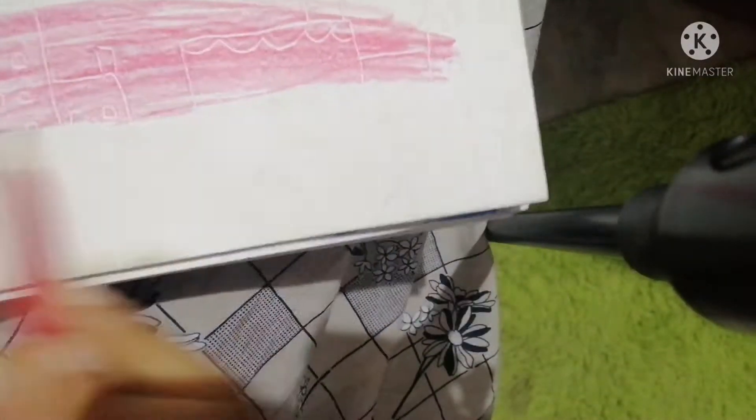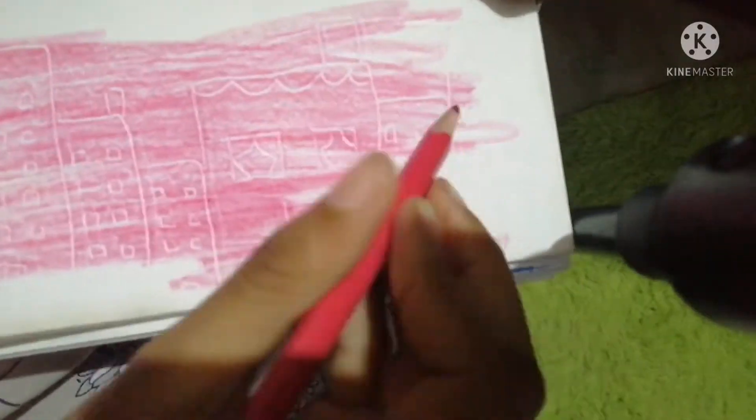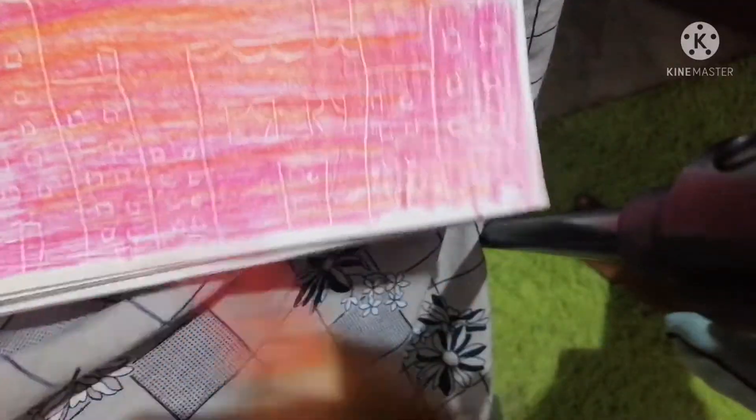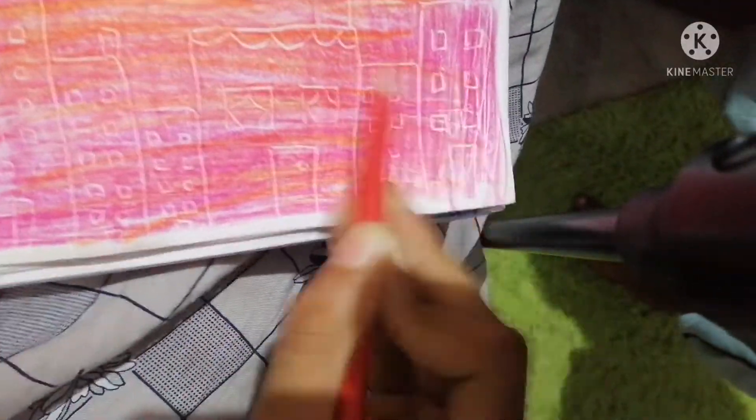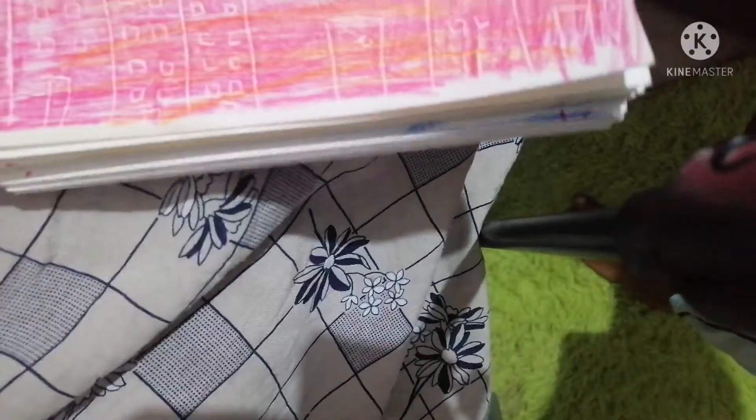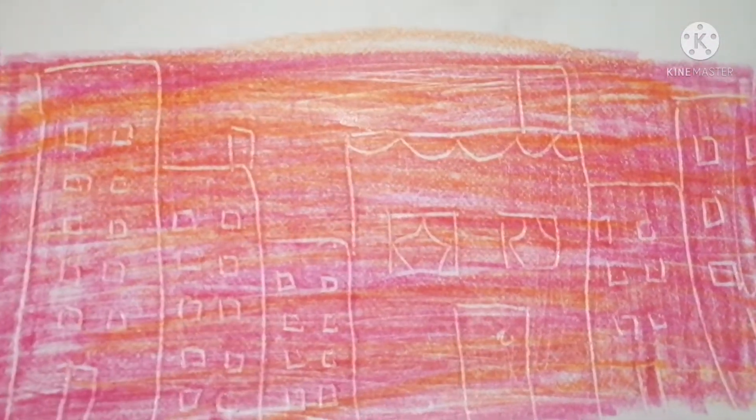Next, color your designs. Remember to press your colored pencils hard, and this will create a different kind of look. I'm using red and pink for this particular design. I've drawn buildings, and here it is.